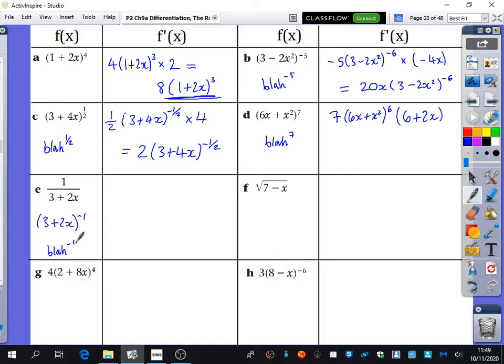Mohin, if something is blah to the power of minus 1, how do we usually differentiate that? Oh, usually it would be minus blah. Minus blah, which is 3 plus 2x, to the power of? Minus 2. Minus 2.